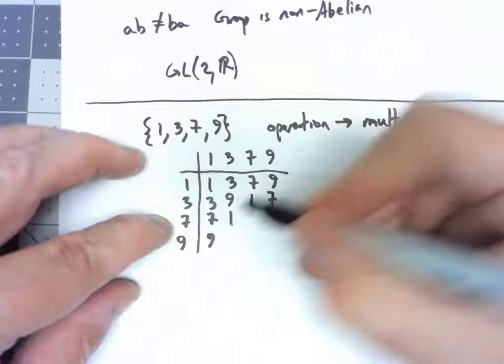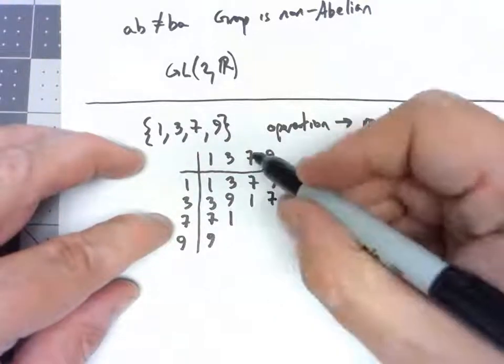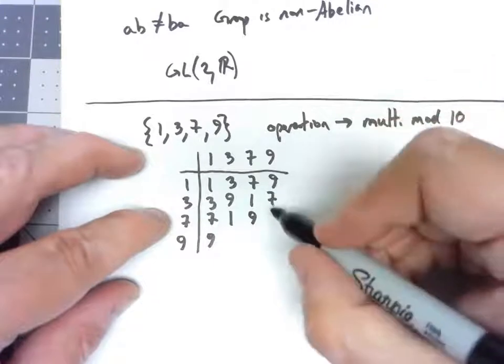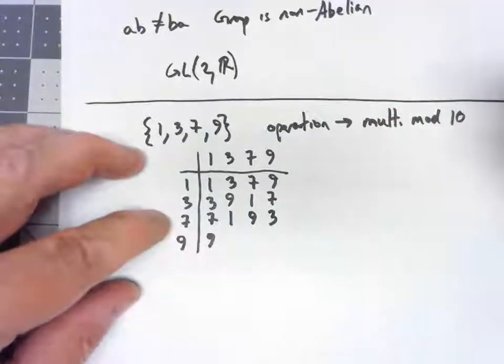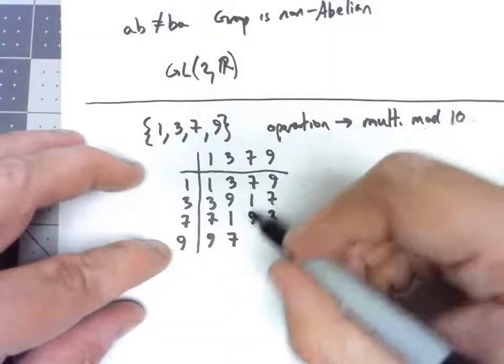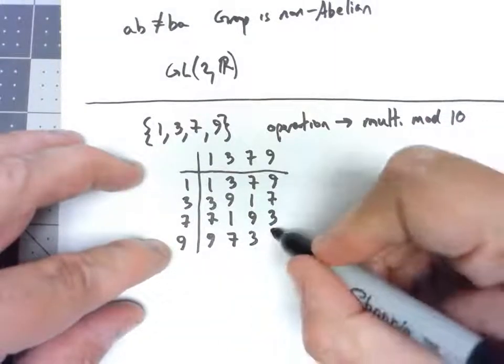7 times 3 is 21, chopped down to a 1. 7 times 7 is 49, chopped down to a 9. 7 times 9 is 63, chopped down to a 3. 9 times 3 is 27, 63, 81.